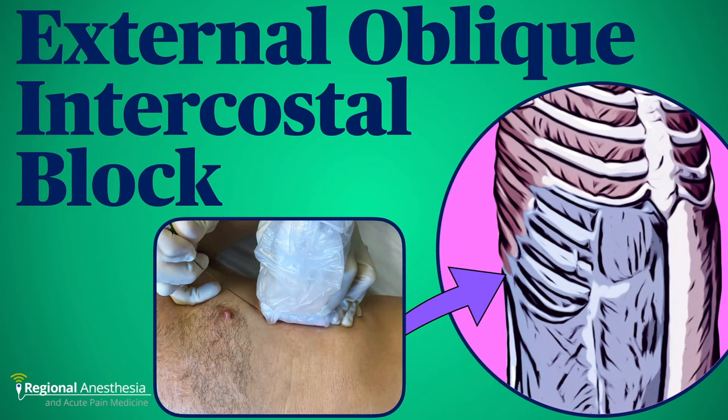The external oblique intercostal block is a new technique that aims to anesthetize the upper quadrants of the abdomen. In this video we'll discuss the rationale, anatomy, sonoanatomy, and the technique for this fascial plane block.